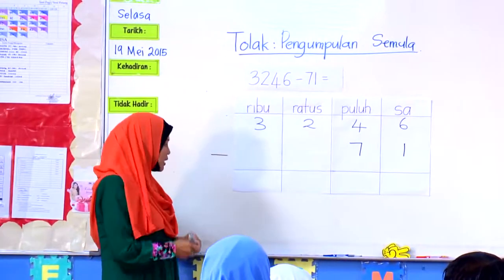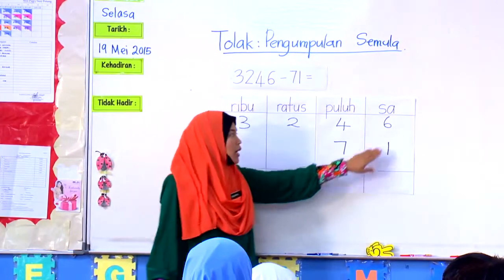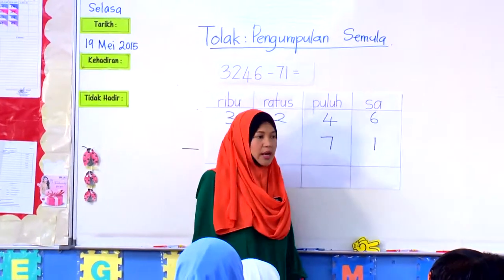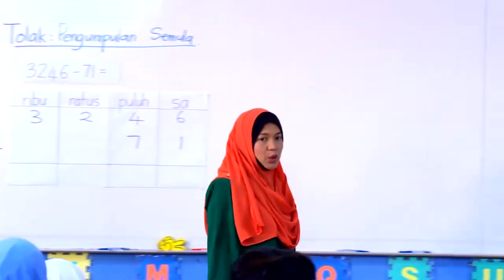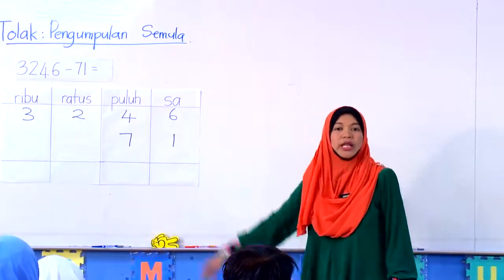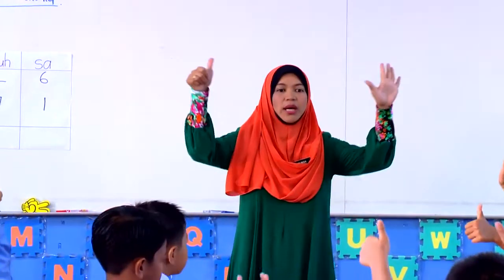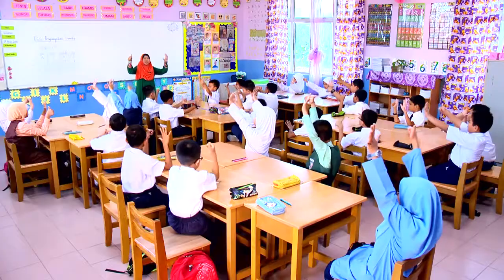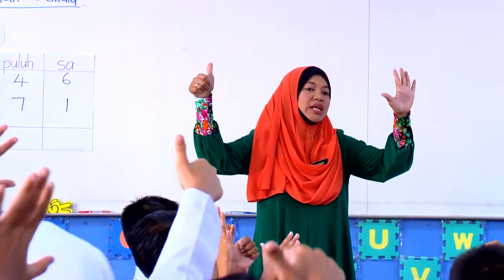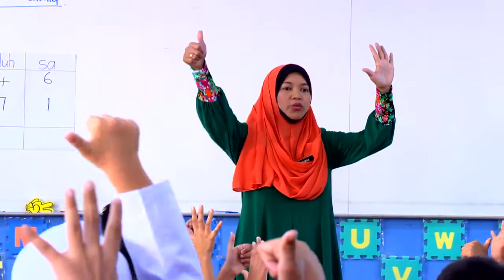Dekat sini, bila kamu lihat soalan seperti ini, 6 ini untuk tolak dengan 1 tidak menjadi masalah. Kerana bila 6 tolak 1, nombor 6 lebih besar daripada nilai 1, kita boleh terus keluarkan 6 jari. Keluarkan 6 jari semua. Kita nak tolak berapa? 1. Tolak 1. Maka nak tutup jari sebanyak berapa? 1. Daripada 6, kita tutup 1.